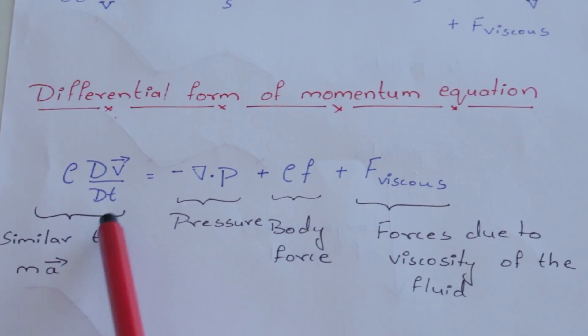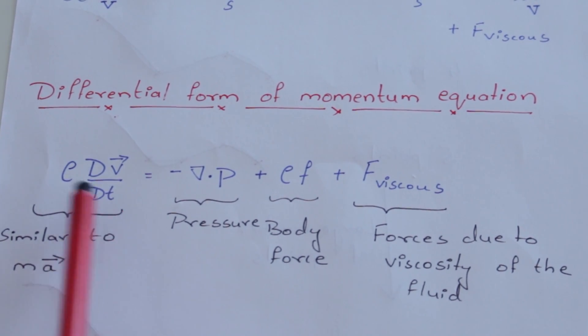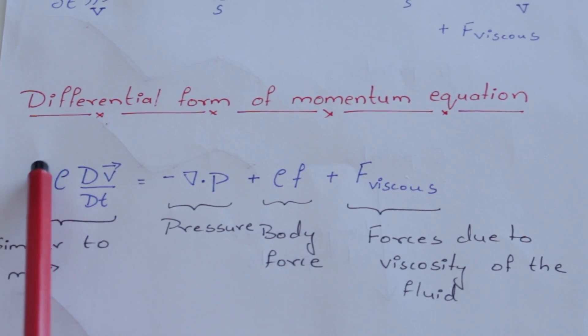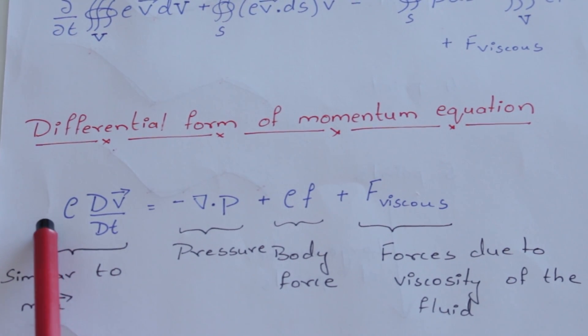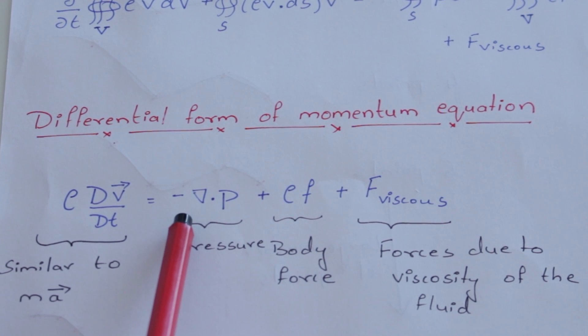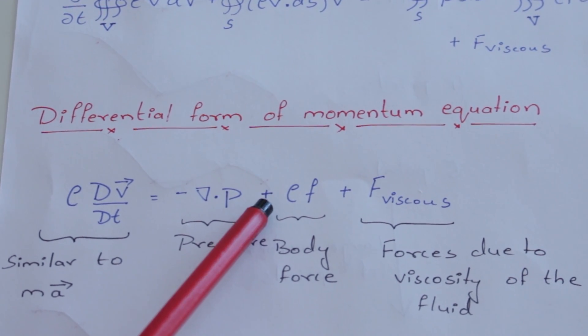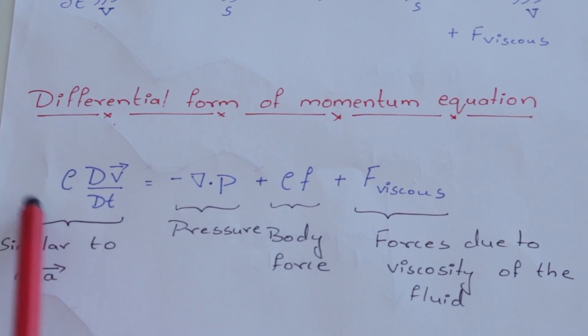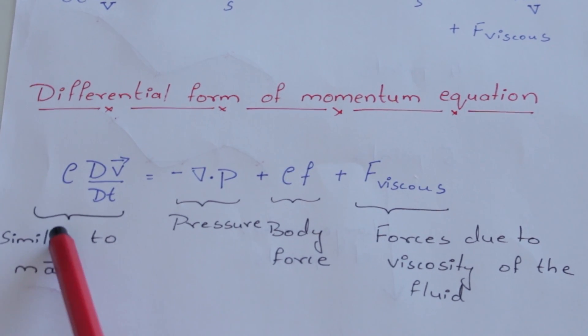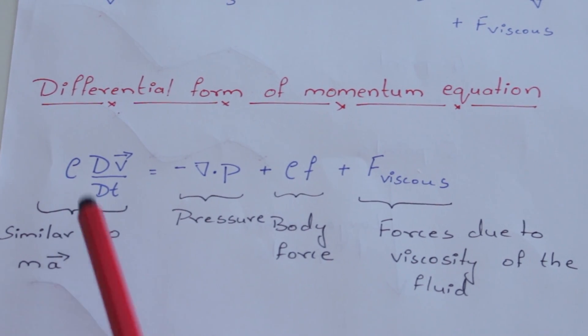Now, actually, the differential form is more intuitive to understand from Newton's second law because you see that you have a mass, represented by a density here, times an acceleration, which is basically a force, which is now balanced by forces. The pressure force, the body forces, and the viscous forces that act on a fluid. So you see that the differential form of the momentum equation is an exact representation of Newton's second law and is very intuitive to understand.